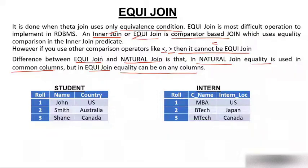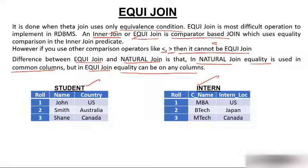Here we have two tables: student and intern. The student table has three columns — role, name, and country. Role number one is John in US, two is Smith in Australia, three is Shane in Canada. The intern table has role, course name, and intern location. Role one is doing MBA with intern location US, role two doing BTEC got Japan, and role three doing MTech got internship in Canada.